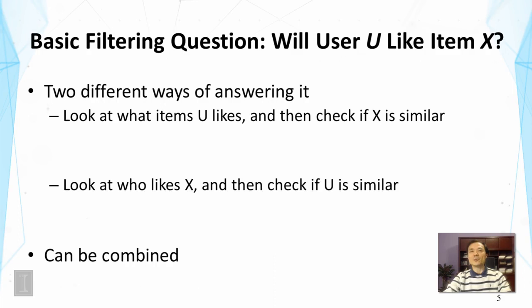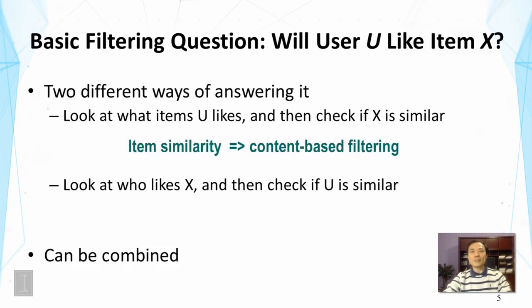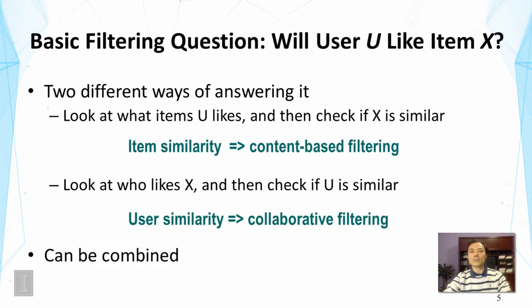The basic filtering question is: will this user like this item? There are two ways to answer this. One is to look at what items you have liked and see if item X is similar to those. The other is to look at who likes X and see if this user resembles those users. The first strategy, comparing item similarity for text objects, is called content-based filtering. The second strategy, exploiting user similarity, is called collaborative filtering.